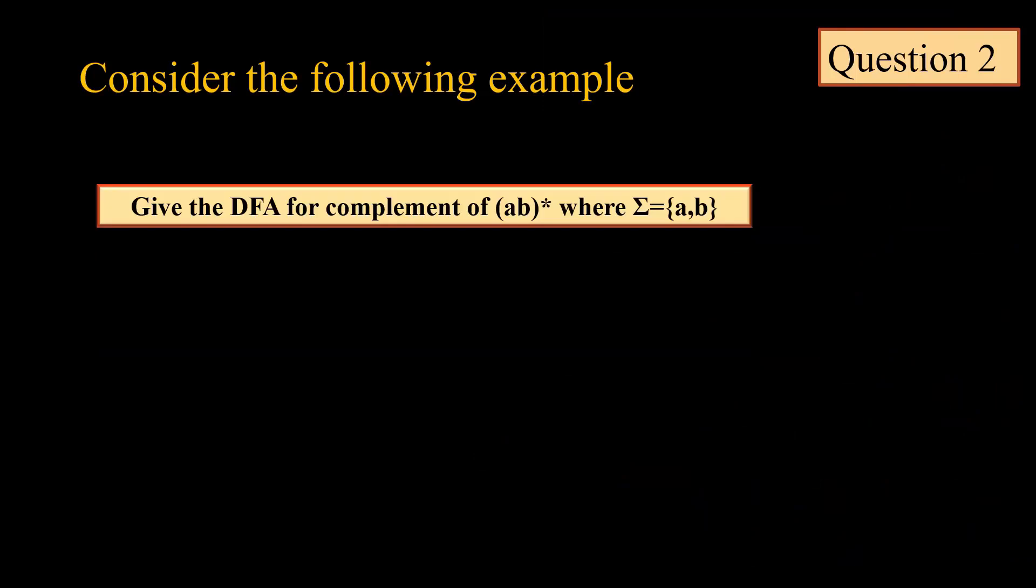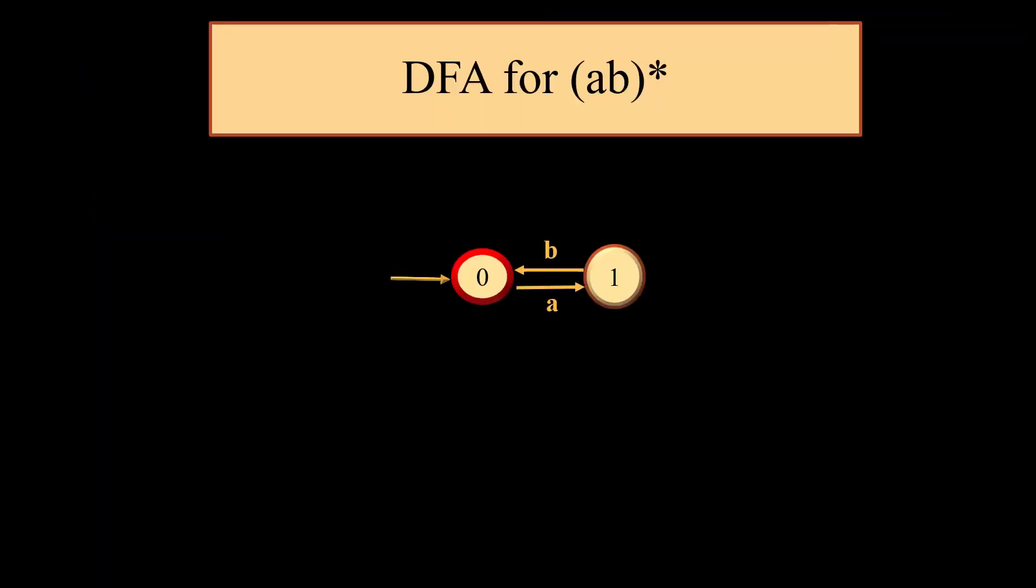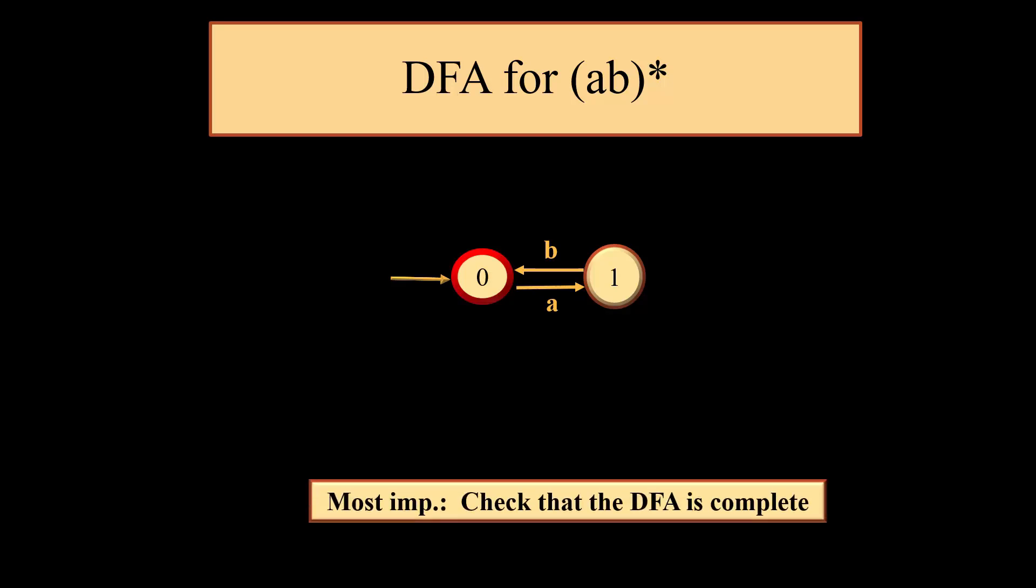Next question: we have to find the complement of (AB) whole star. We will first draw the machine corresponding to AB star. This is the DFA which we get for AB star. As we can clearly see here, we have only two states, and whenever we are talking about complement, it is necessary that the DFA should be complete.